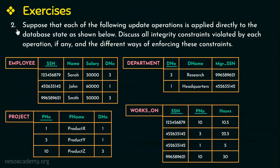The next question is a homework problem for you to try yourself. It is similar to the exercise discussed in the previous video. Suppose each of the following update operations is applied directly to the database state shown. Discuss all integrity constraints violated by each operation, if any, and the different ways of enforcing those constraints. The database has four relations: employee (primary key SSN), department (primary key D-number), project (primary key P-number), and works-on (primary keys SSN and P-number).